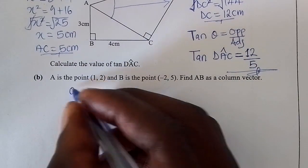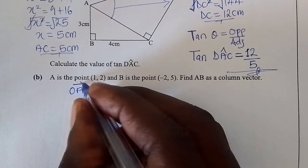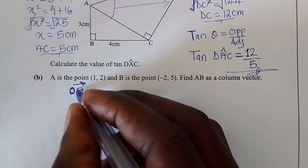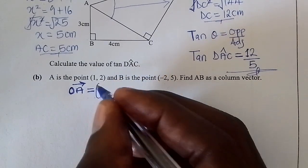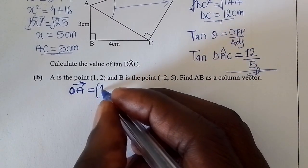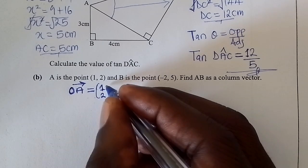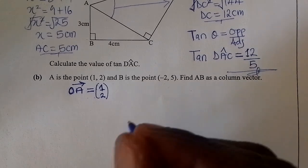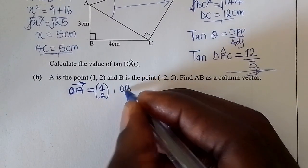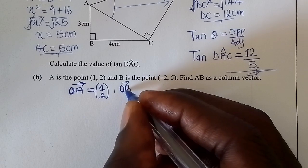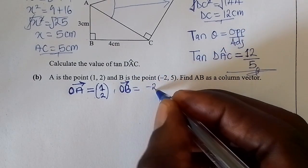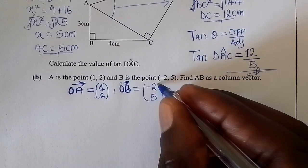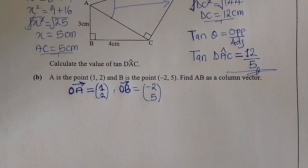We introduce O with an arrow, since this is coming from the origin. So OA as a column vector — we write the x-value on top and the y-value below — giving OA as (1, 2). Then OB, from O to B, is (-2, 5). So these are the two column vectors we can form from points A and B.